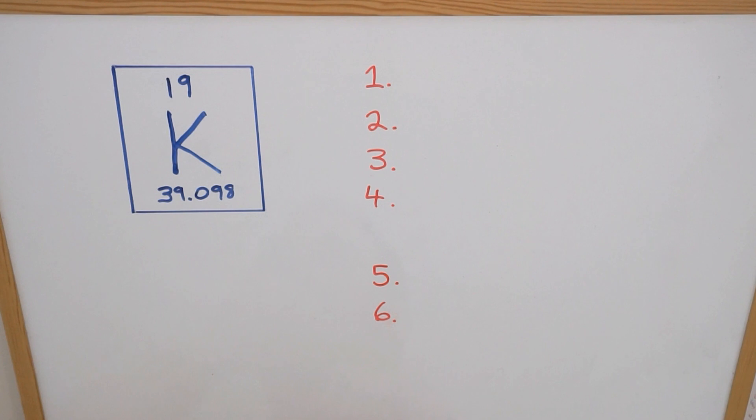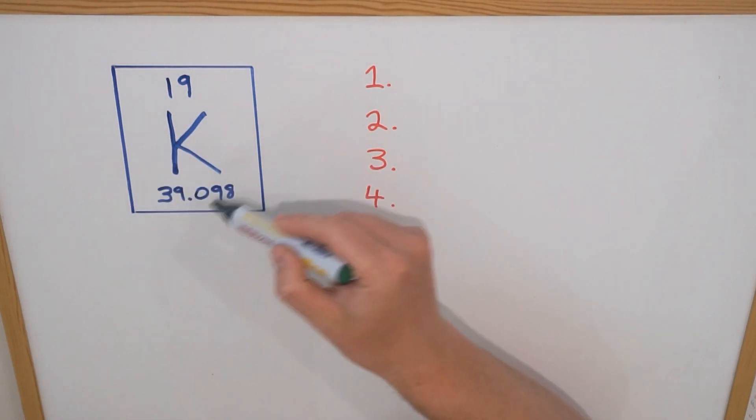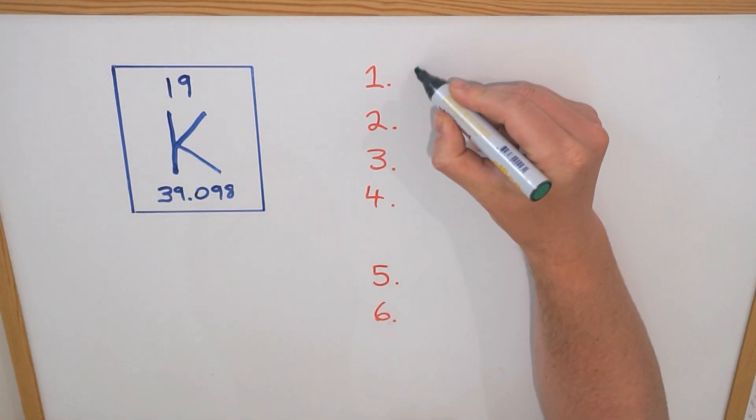The first thing that you might get asked in a test is to identify the element or the symbol of the element. In this case we are given the symbol K and that represents the element potassium.